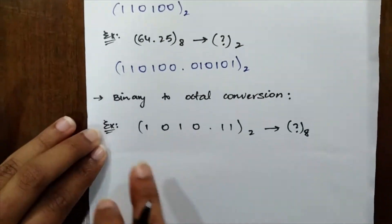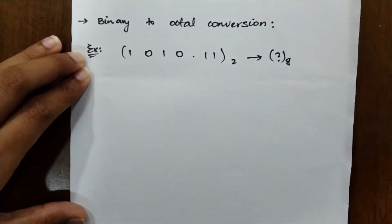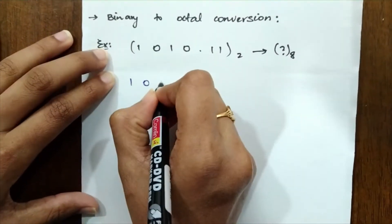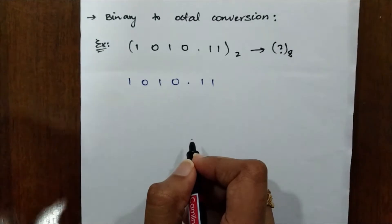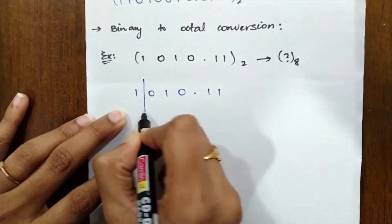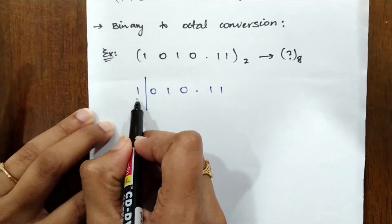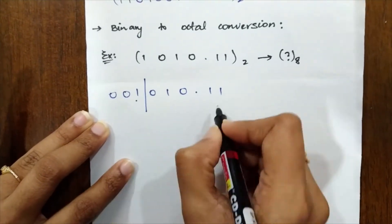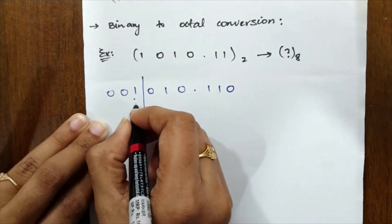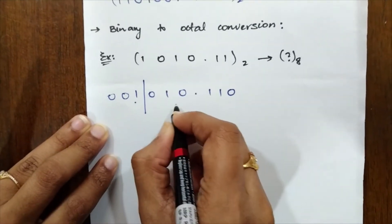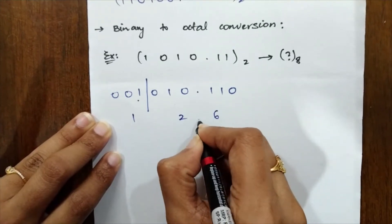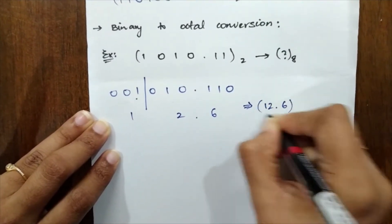Now coming to binary to octal conversion. Recall that octal uses only three bits. Whenever you are given a bit string, such as 1010.11, you group them into sets of three bits. Starting from the decimal point moving left: 010, then we are left with only one bit, so append zeros to get 001. After the decimal, 110 — append a zero to make a group of three. Now convert: 010→2, 001→1, 110→6. So the octal representation is 12.6.